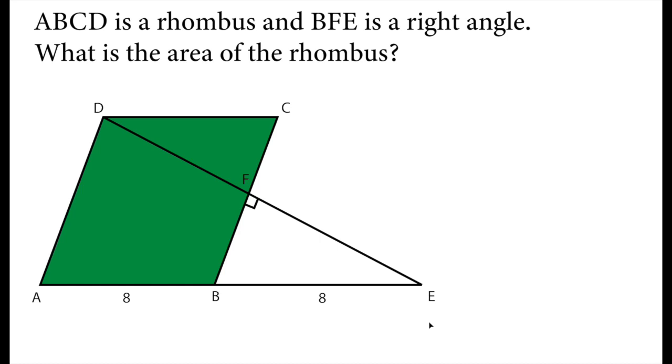ABCD is a rhombus and BFE is a right angle. What is the area of rhombus?